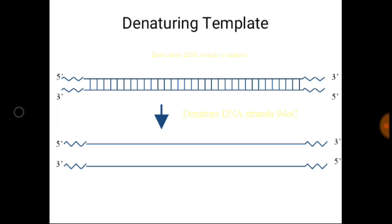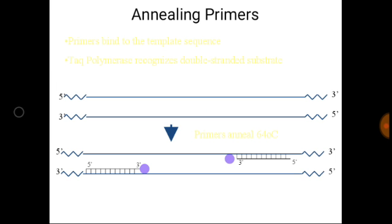It should be noted that the extension of primers continues until the strands are separated during the denaturation step of the next PCR cycle. Here is a picture of the denaturing template — this is a double-stranded DNA that at 94 degrees Celsius is denatured into single strands. These single strands serve as the template DNA for the synthesis of new DNA.